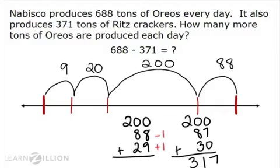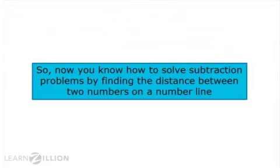688 minus 371 equals 317. Now you know how to solve subtraction problems by finding the distance between two numbers on a number line.